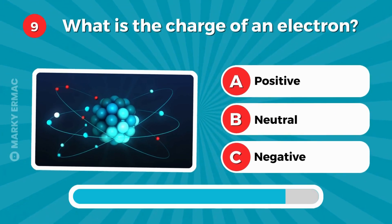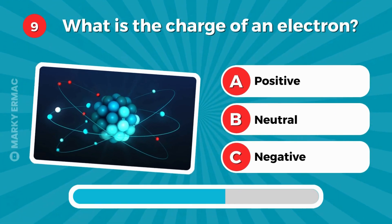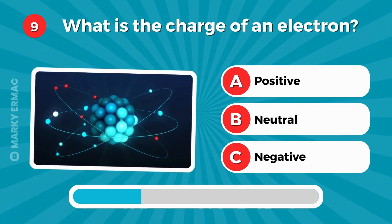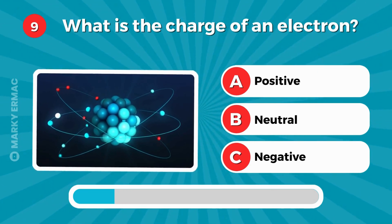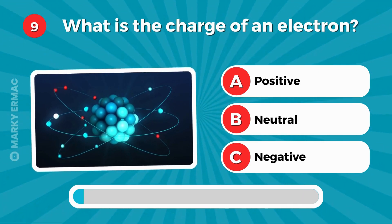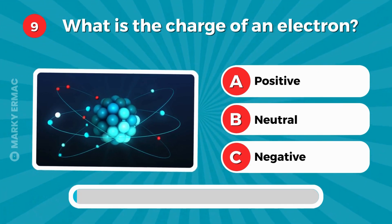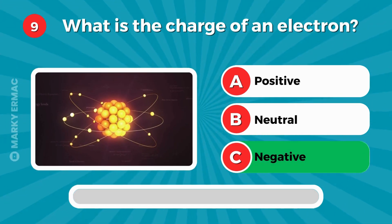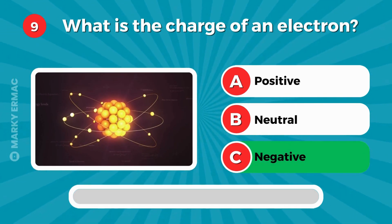What is the charge of an electron? Positive, neutral, or negative? It's negative.